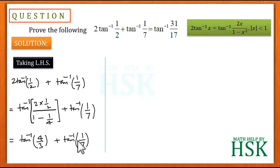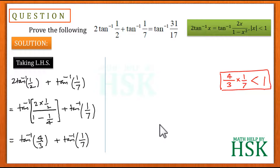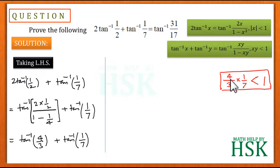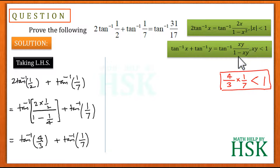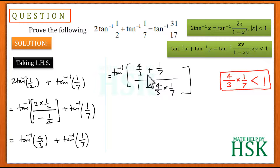Next, we combine these two terms using the sum formula. We verify that (4/3)·(1/7) = 4/21 < 1, so we can apply tan⁻¹(x) + tan⁻¹(y) = tan⁻¹((x + y)/(1 − xy)). This gives tan⁻¹((4/3 + 1/7) / (1 − (4/3)·(1/7))).